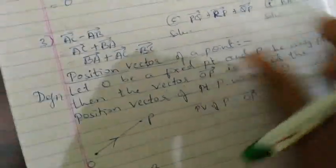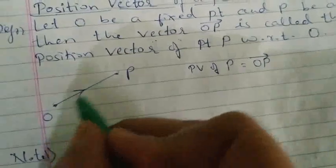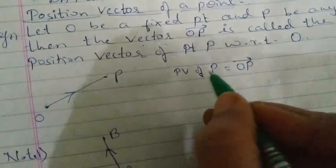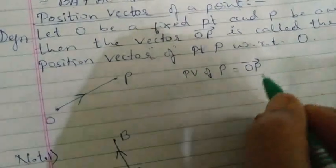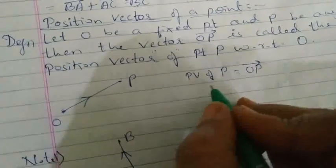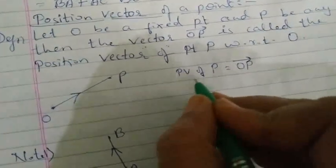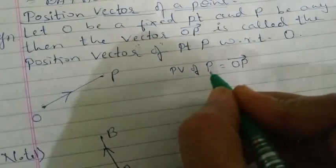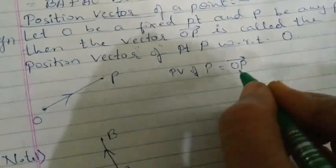So here O is fixed and P is the point. The position vector of P is equal to OP vector. What I want you to remember: when asked the position vector of P, the symbol to write is OP vector. Position vector of A — symbol to write is OA vector. Position vector of B — symbol is OB vector.